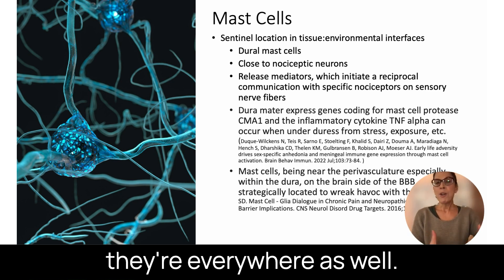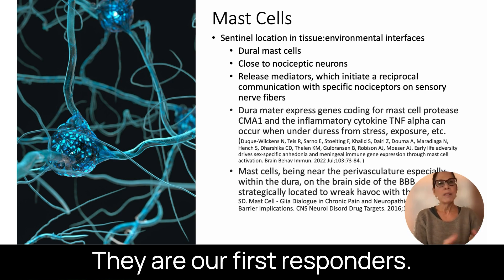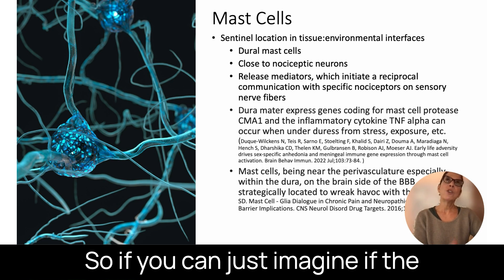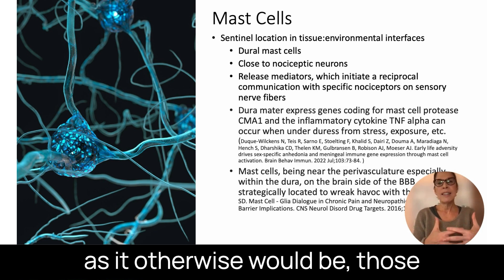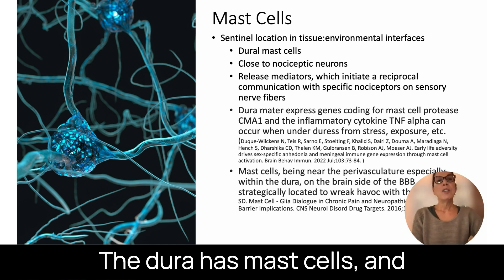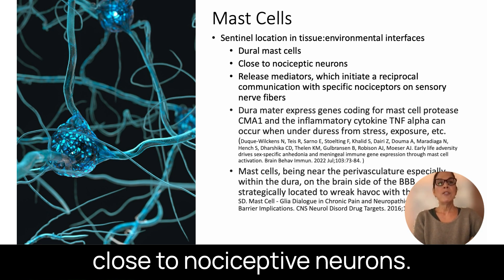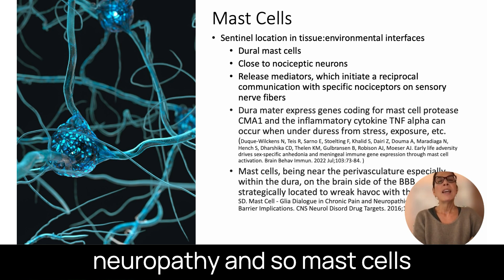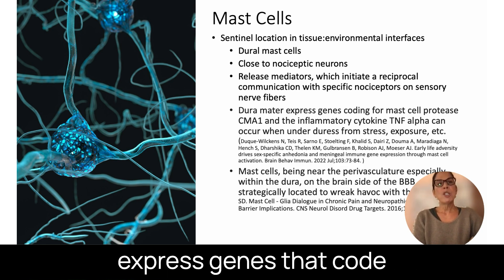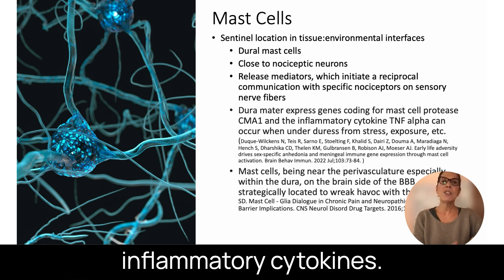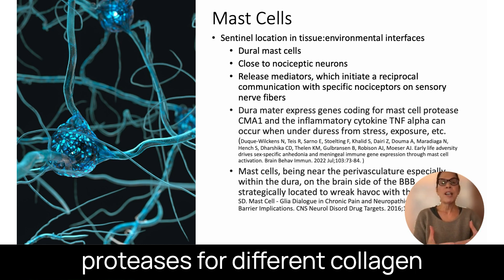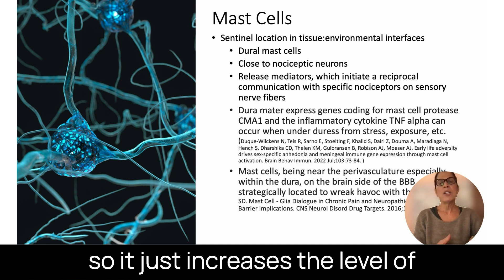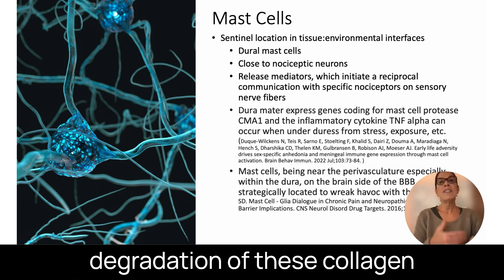Mast cells are everywhere — they're ubiquitous. They are part of our innate immune system and our first responders. They are in high concentration in connective tissue, with a sentinel location at tissue-environmental interfaces. If the connective tissue isn't as taut as it would otherwise be, those mast cells are a lot more exposed. The dura has mast cells, and mast cells in general are very close to nociceptive neurons — specifically small fibers — which is why there is a coexistence of small fiber neuropathy. The dura expresses genes that code for mast cell proteases and inflammatory cytokines, and these proteases break down different collagen fiber types.